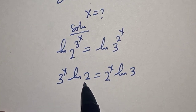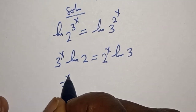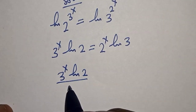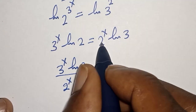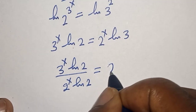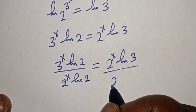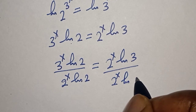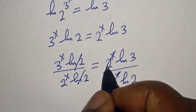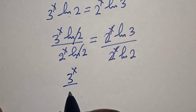Now let's divide both sides by natural log 2 and 2 to the power of x. That is: 3 to the power of s times natural log 2 divided by 2 to the power of x times natural log 2 is equal to 2 to the power of s times natural log 3 divided by 2 to the power of x times natural log 2. This cancels with this, and we have 3 to the power of s over 2 to the power of s is equal to natural log 3 over natural log 2.